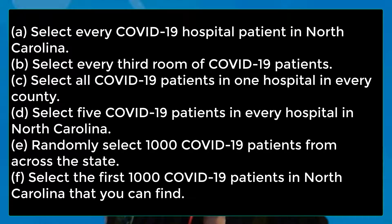Each of these requires that you collect data from COVID-19 patients. Let's stick to COVID-19 hospital patients in North Carolina. There are many ways to collect that data — six examples are given below. Select every COVID-19 hospital patient in North Carolina. Select the third room of COVID-19 patients. Select all COVID-19 patients in one hospital in every county. Select five COVID-19 patients in every hospital in North Carolina. Randomly select 1,000 COVID-19 patients from across the state. Select the first 1,000 COVID-19 patients in North Carolina that you can find. Each of these uses a different sampling method that you should be able to identify by the end of Chapter 1.